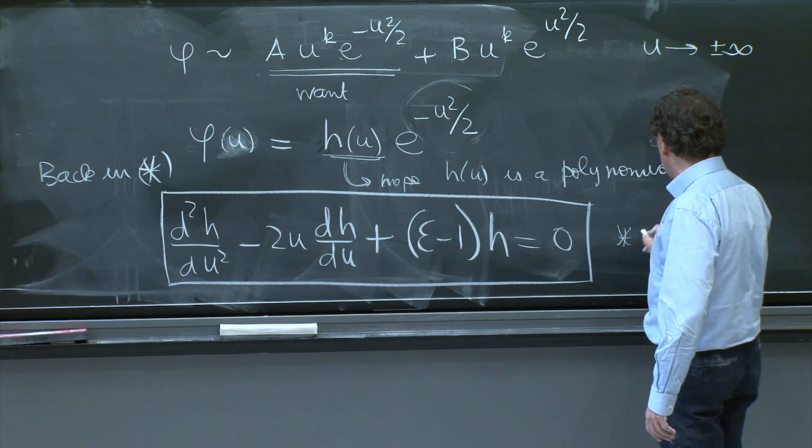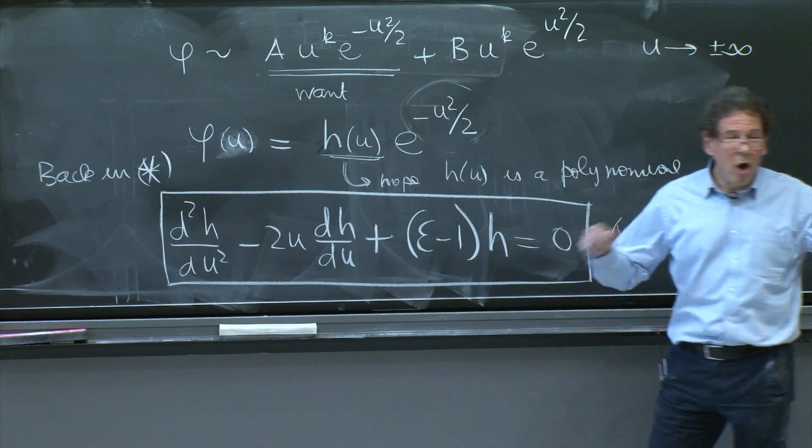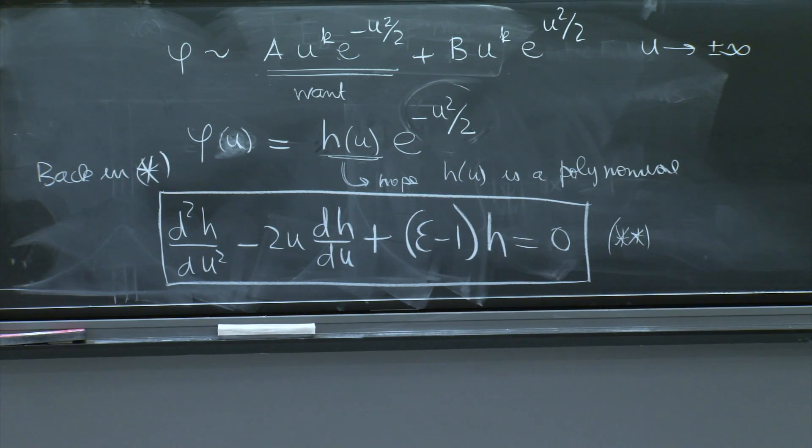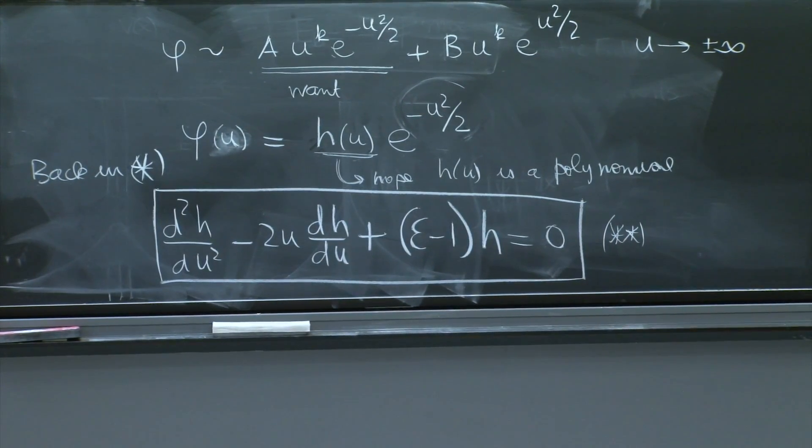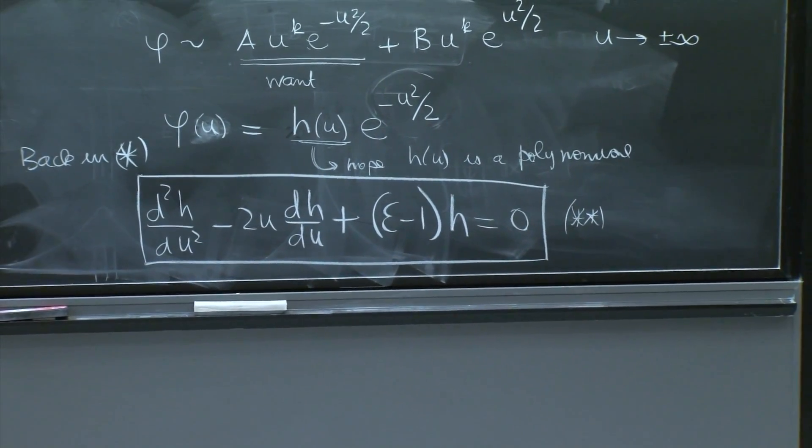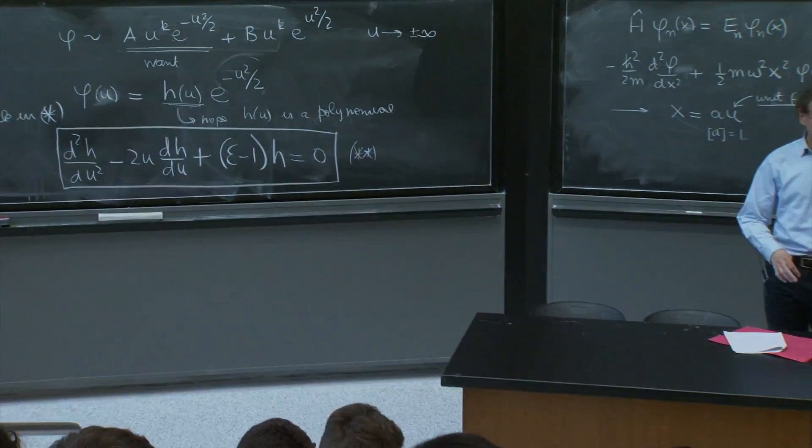So you substitute that into this equation, and you get this differential equation. And now this is a differential equation for h. We hope it has a polynomial solution. You will see that it wants to have a polynomial solution, but doesn't quite make it. And then you will discover that quantization helps. And suddenly, you get the polynomial solution, and everything works out.